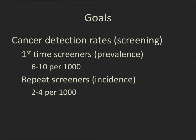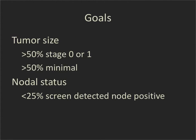For cancer detection rates from screening, goals are divided into prevalence and incidence screenings. For prevalence screenings — first-time screeners — we want to detect 6 to 10 cancers per 1,000 patients screened. For repeat screeners (incidence screening), a lower number: 2 to 4 per 1,000 screened. For pathology goals, greater than 50% of cancers should be stage 0 or 1, and over 50% should be minimal stage — under 1 centimeter or DCIS. Fewer than 25% of screen-detected cancers should be node-positive, excluding patients presenting with palpable masses. These are the audit statistics reviewed by the FDA annually.